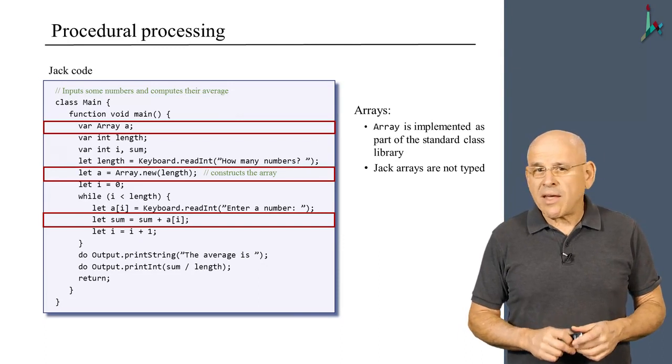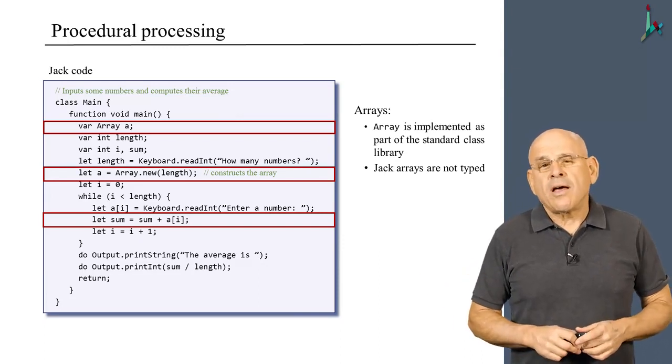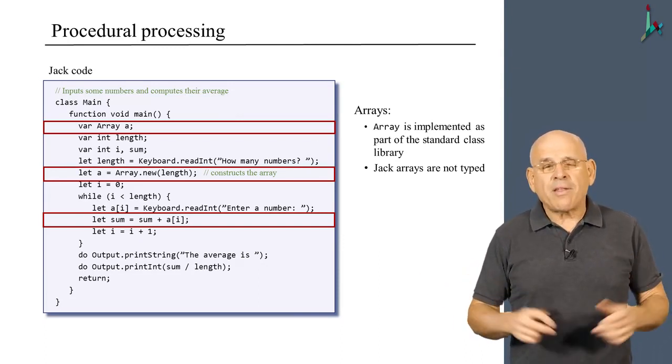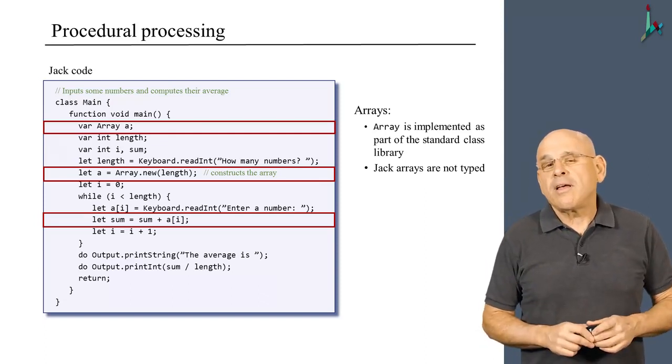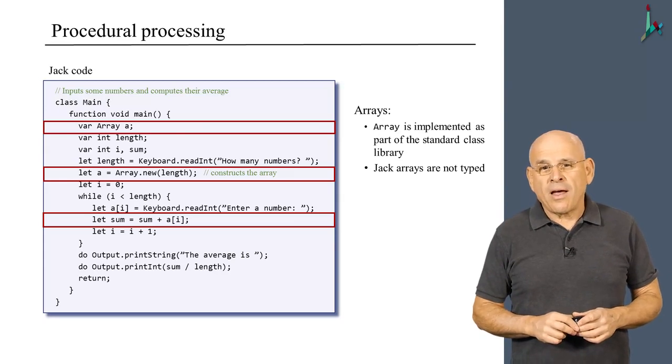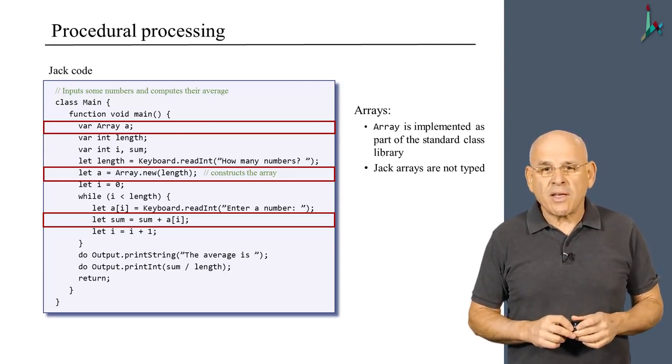And interestingly, Jack arrays are not typed. So they can contain any value of any type that you can think of within the very same array, which is a little bit peculiar. But we'll use it in all sorts of interesting ways down the road.